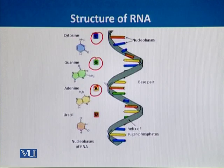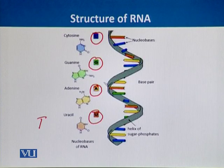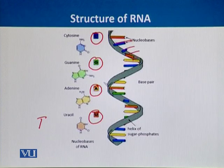But we remember that in DNA we have thymine, but in RNA thymine is replaced with uracil. So although RNA has four nucleotides, the difference is of uracil. We can also see that these nucleotides are arranged in a polymeric way, but there is no complementary strand in RNA, so its structure is single-stranded.